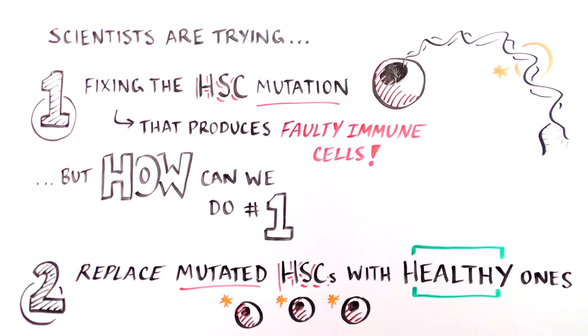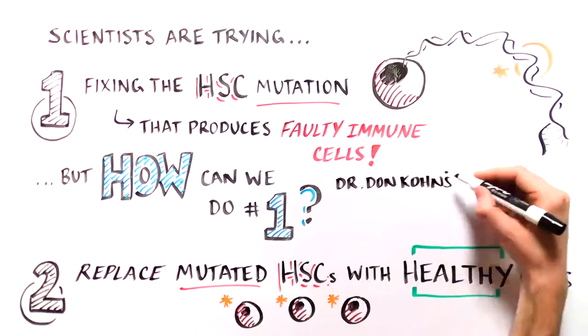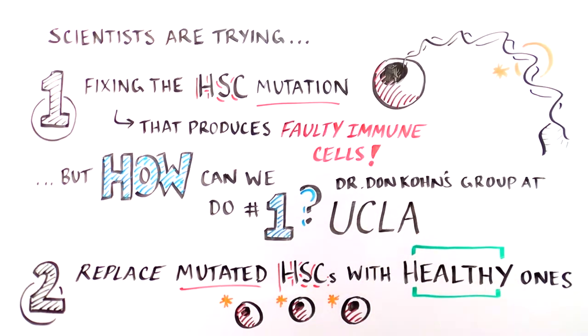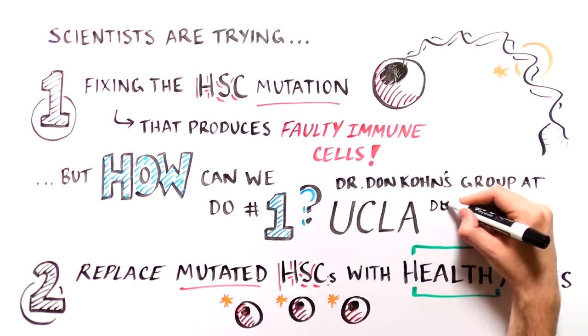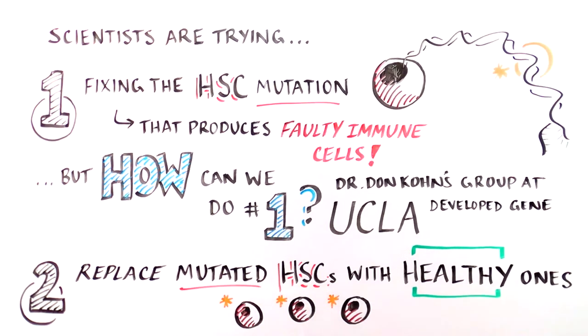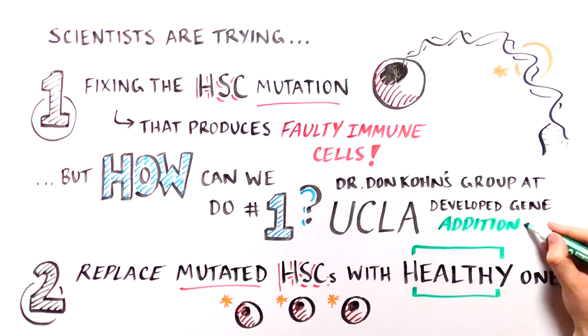Let's start by discussing how we can go about fixing the mutation. Researchers in the group of Don Cohn at UCLA and others have been tackling this problem since the 1990s. They have developed a strategy to repair a gene mutation in HSCs from SCID babies, a method we'll call gene addition.